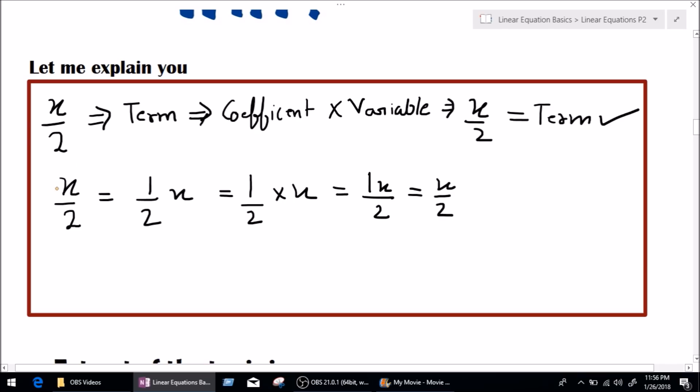So, what we should be looking at right now is this term. Now, what is x? We all know what is x. x is a variable. What is 1 over 2? It is a coefficient. And they both are multiplied together.